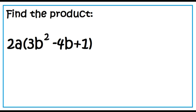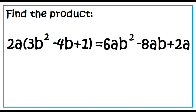Find the product of 2A times the quantity 3B squared minus 4B plus 1. The answer is 6AB squared minus 8AB plus 2A.